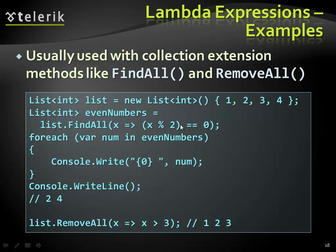For example, we have a list of integers and another list of integers called EvenNumbers. We call the FindAll method on the list. What we have here is an expression that traverses our list and checks our objects — a Boolean expression that says: if I get the remainder of division by 2 and it equals 0, that means there is no remainder, and those are the X values that will be returned. We're constructing a new list based on a rule defined for each object in the list.